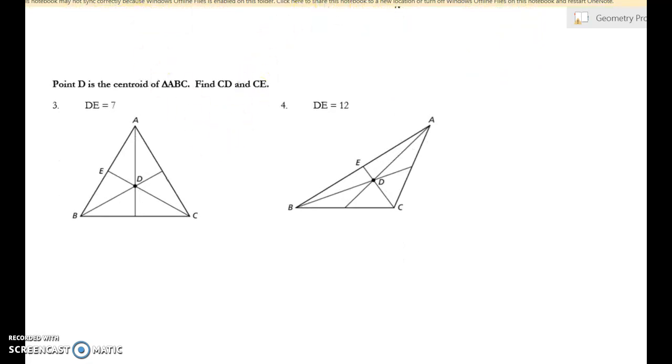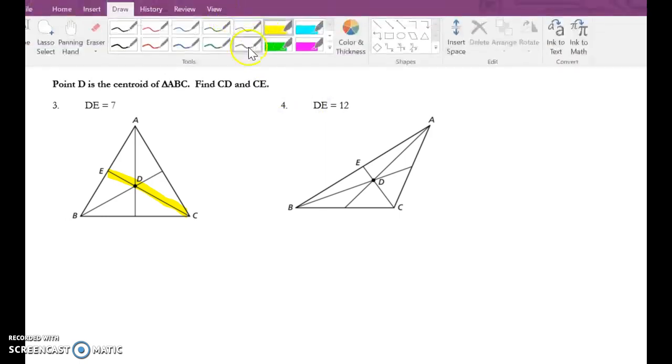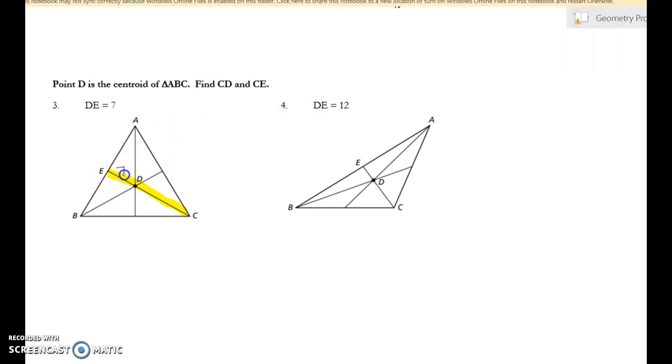Okay, down here, let's see. This one's a little different. So it says D to E, this is seven. So that's the median we're dealing with. So if this one's seven, then this one's twice as long. So D to C is 14. And then the whole thing, E to C, you just add those up, which is 21.